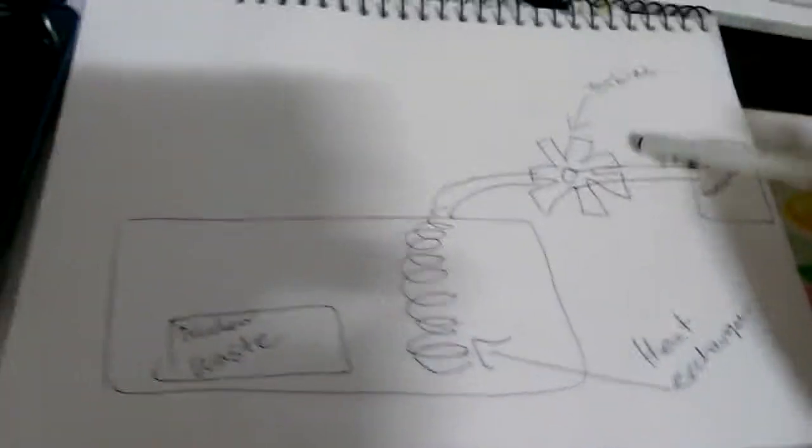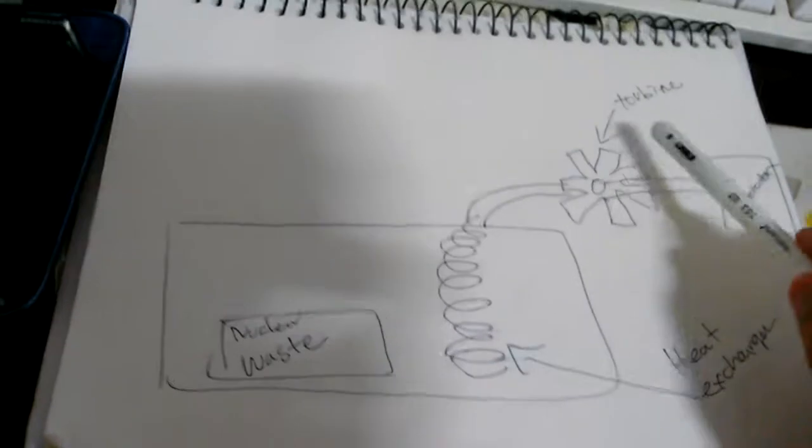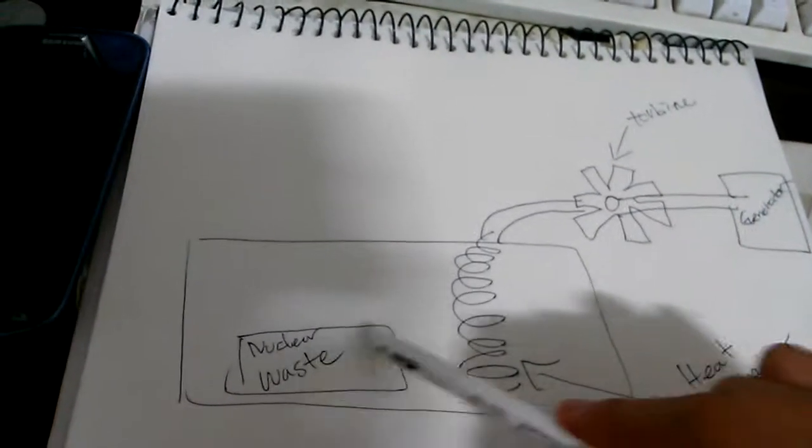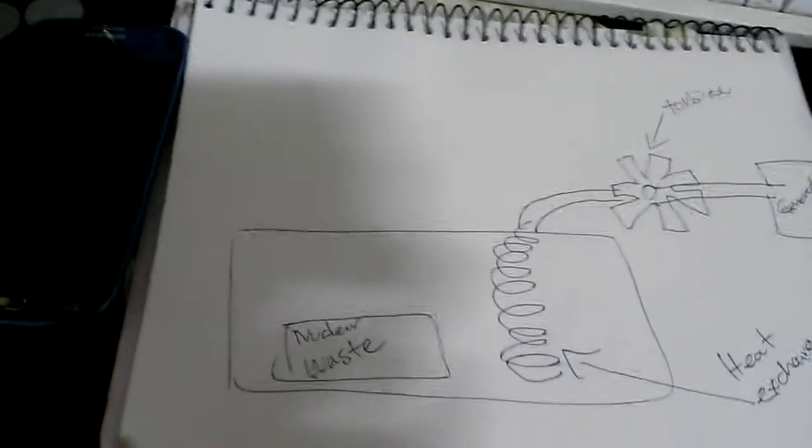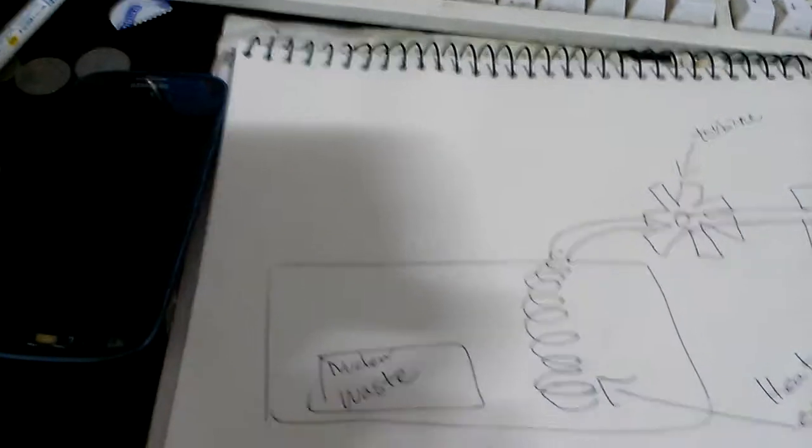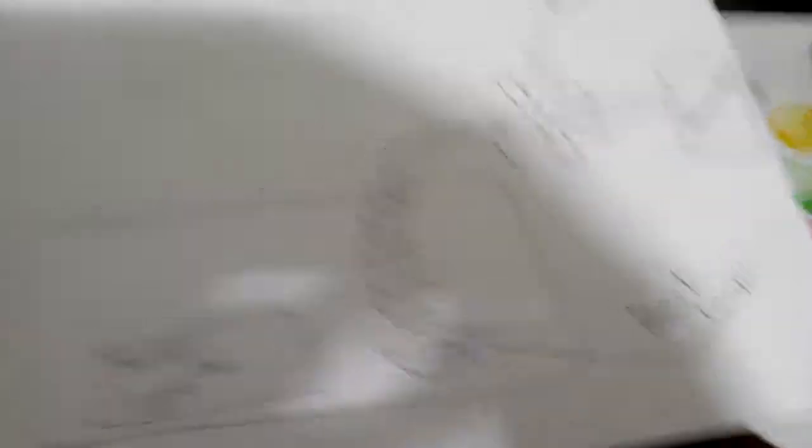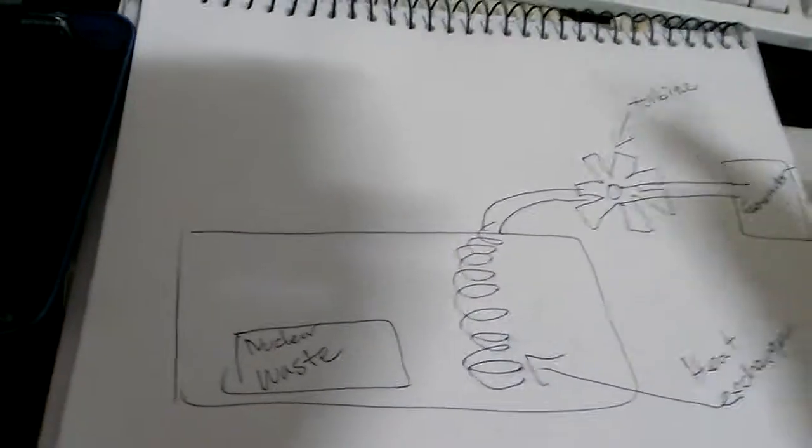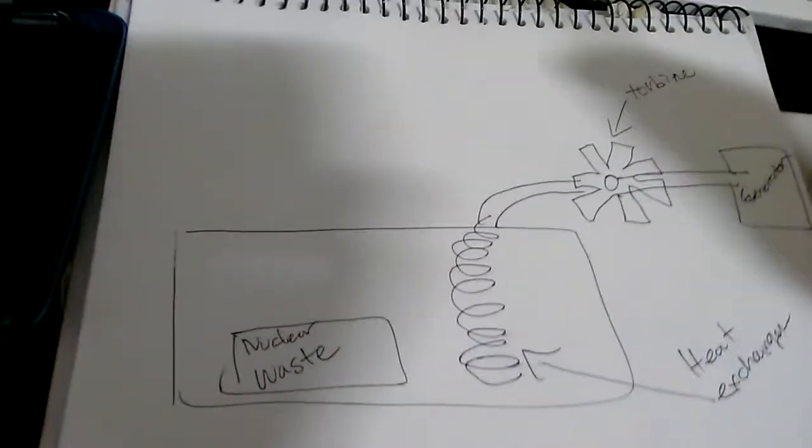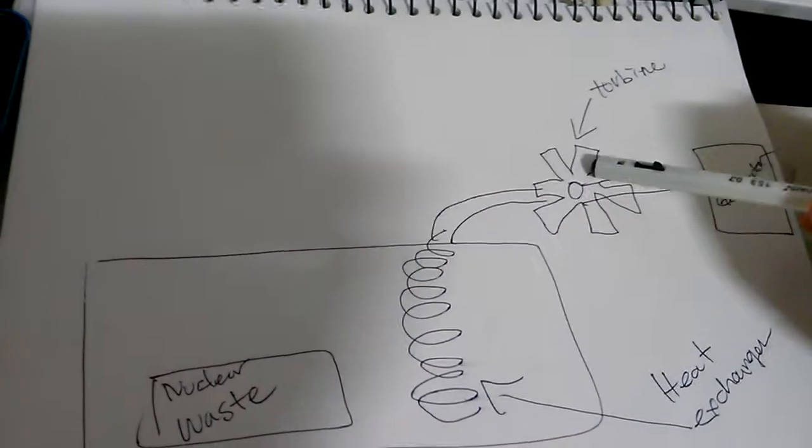But if we use a regular turbine, it won't spin because the nuclear waste heat is lower. It's still hot, we're talking about like 400 degrees, but it's not as hot as the beginning, from the first use.